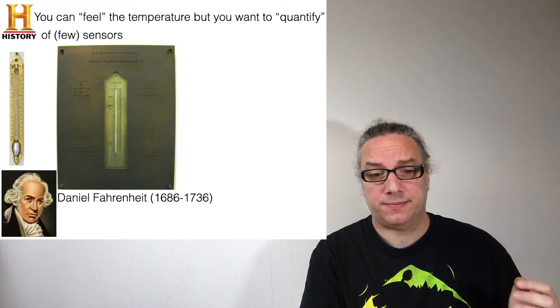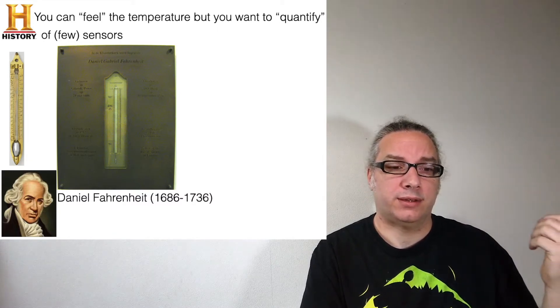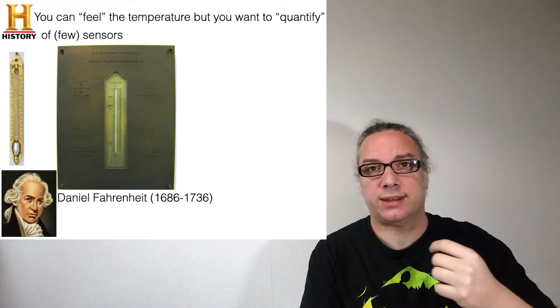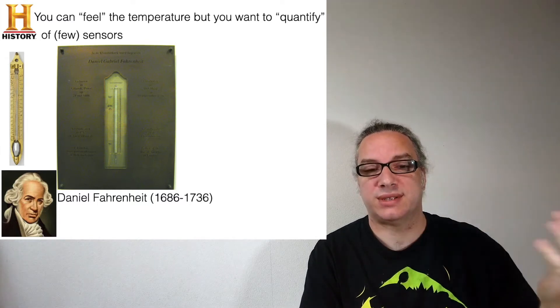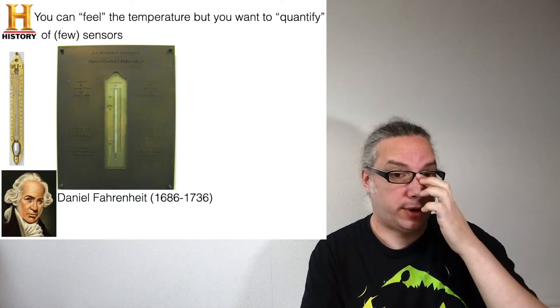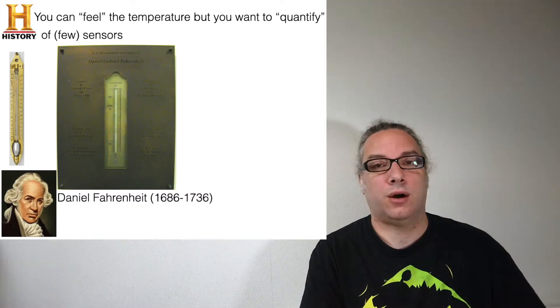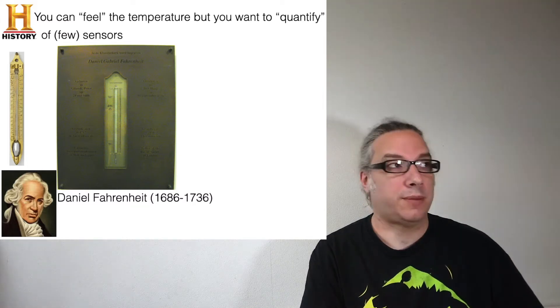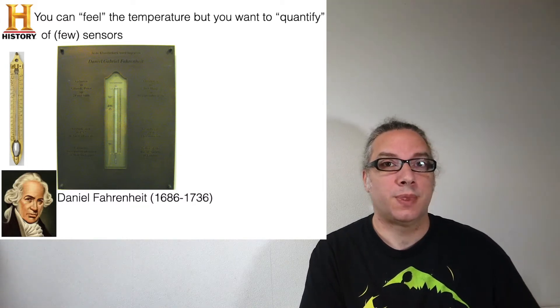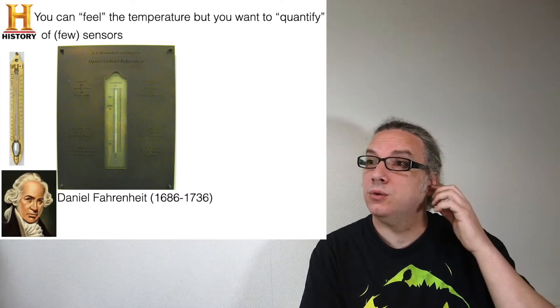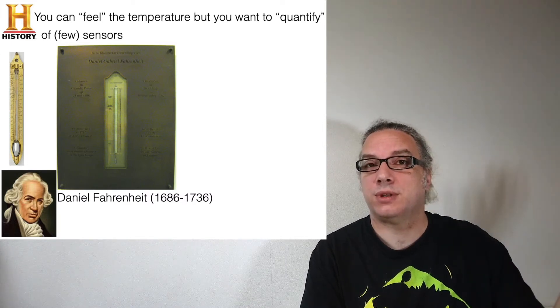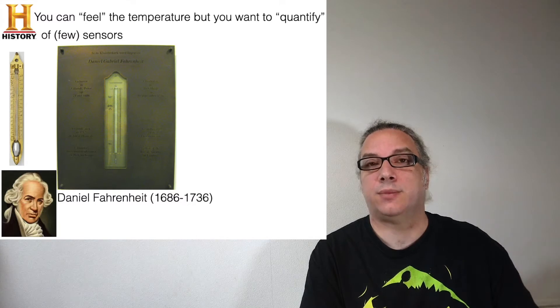Another 100 years later, we got Fahrenheit. This one actually was the first real thermometer, the first thermometer we are still using today. So it was with Mercury. You can see the scale of the temperature because at certain point with Galilei you know more or less the temperature, but you don't have any scale at that point.